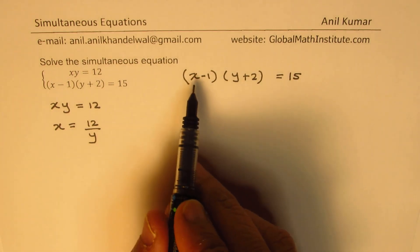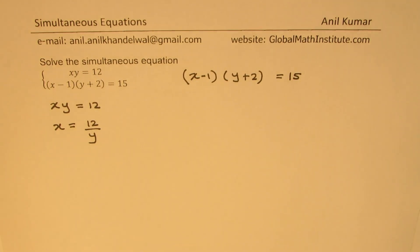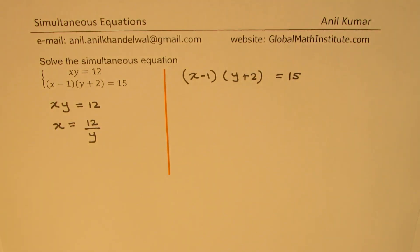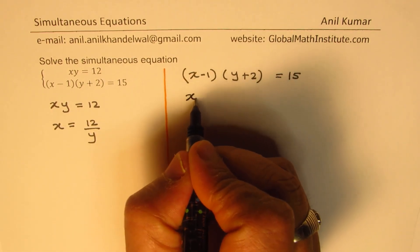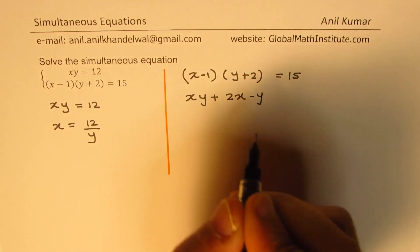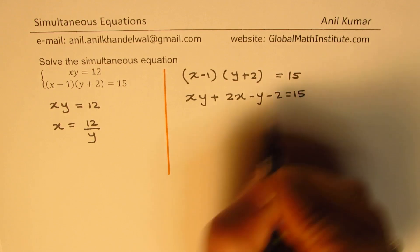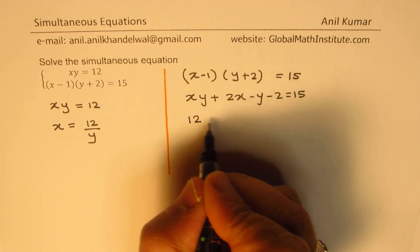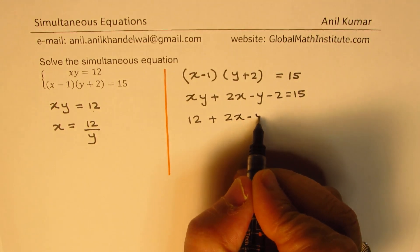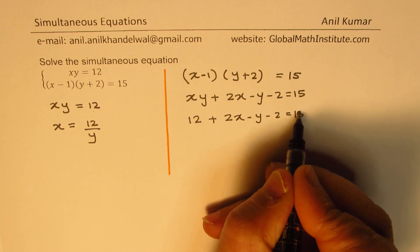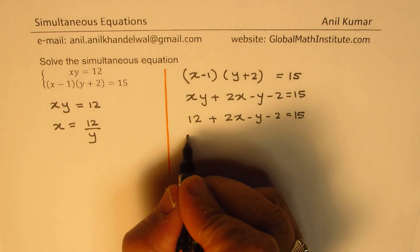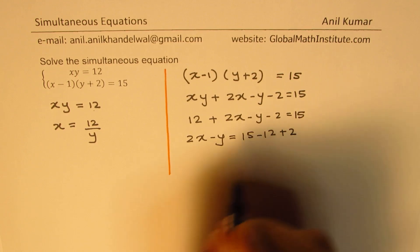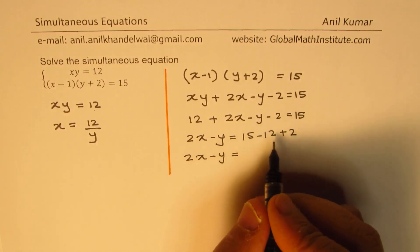The other way is that we can first expand it — we'll get an xy term and then we can simplify. It is simpler if I first expand. So if I expand, I get xy plus 2x minus y minus 2 equals to 15. Now since we know that xy is 12, we can replace the term xy with 12. So we get 12 plus 2x minus y minus 2 equals to 15. Taking the constants to the other side, we can write this as 2x minus y equals to 15 minus 12 plus 2, so 2x minus y equals to 5.